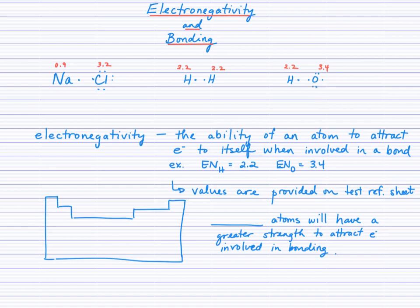Let's think about an atom's ability to attract electrons to itself. Do you think larger atoms will be better able to attract electrons when involved in bonding, or smaller atoms? Hopefully you're thinking smaller atoms, considering the ability of that nucleus to attract a nearby electron. And so the trend then —